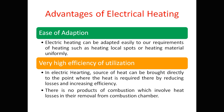Next, very high efficiency of utilization: in electrical heating, the source of heat can be brought directly to the point where heat is required, thereby reducing losses and increasing efficiency. Electrical energy can travel directly to that point without loss, whereas for other energy forms it is costly or lossy to transfer. Also, there are no products of combustion — as compared to thermal power plants, there is no combustion process, so losses from combustion are eliminated and there is no need to remove ash from a combustion chamber.